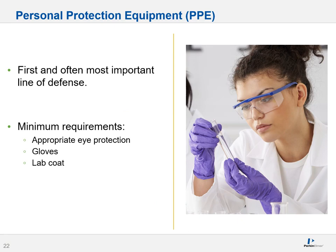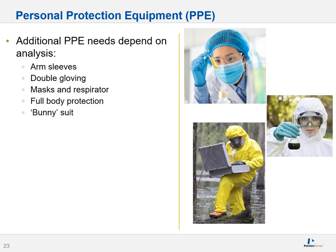Let's have a chat about personal protective equipment, also called PPE. This is often the first and most important line of defense. At very minimum levels, you need appropriate eye protection, appropriate gloves, and a lab coat as a base level of PPE. Additional PPE might be needed based on the type of analysis you're conducting, the type of instrumentation, or the types of samples you're working with. These guidelines are usually defined in the instrument methodology, sample preparation methodology, or protocols.